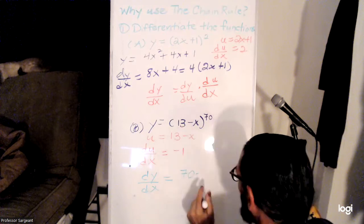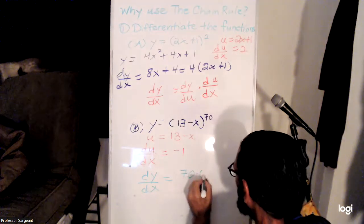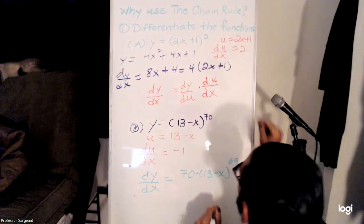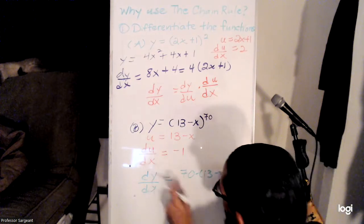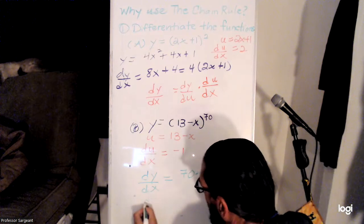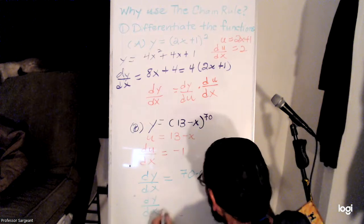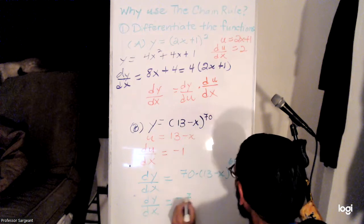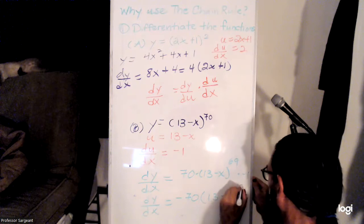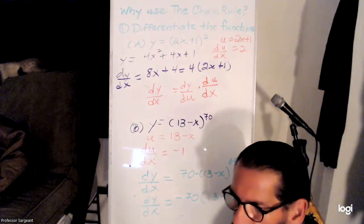Times this now raised to the 69th power, times the derivative of u with respect to x. So dy over dx would equal negative 70 times the quantity 13 minus x to the 69th power.